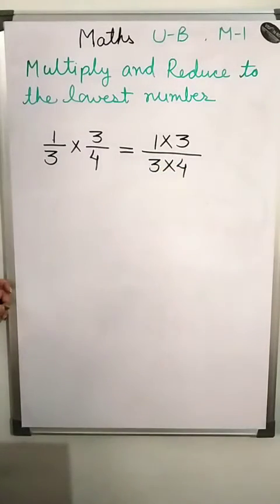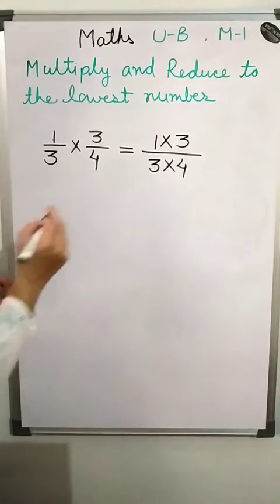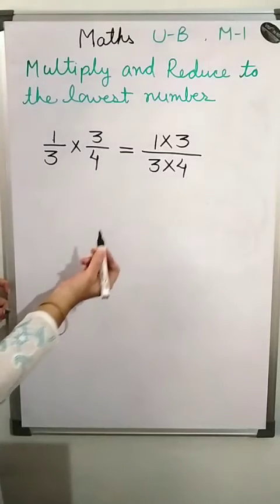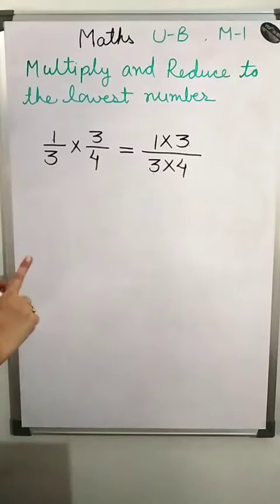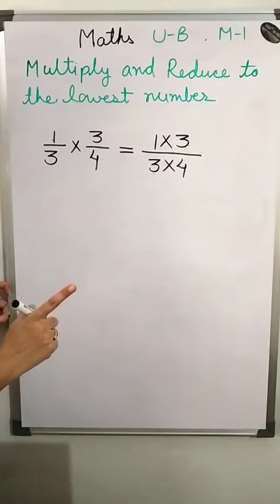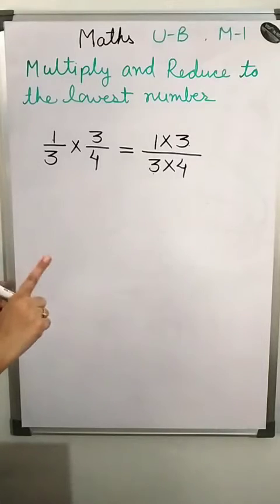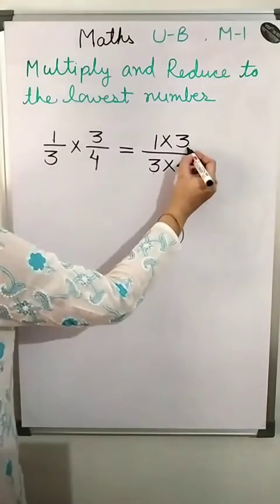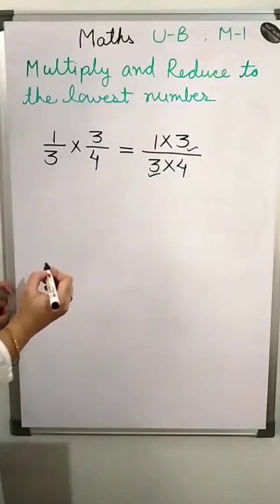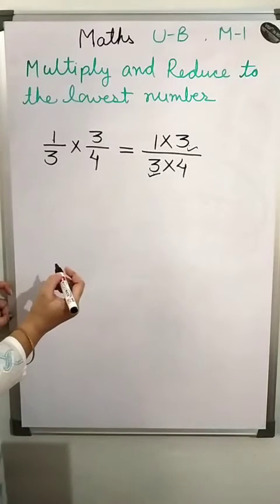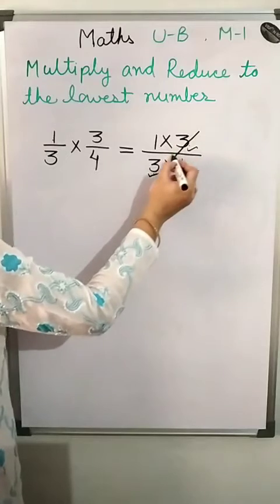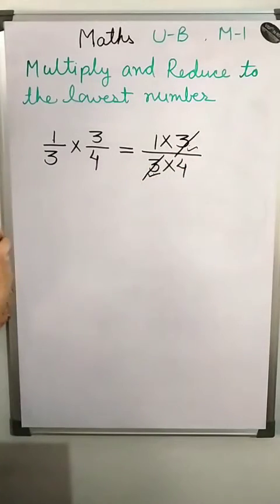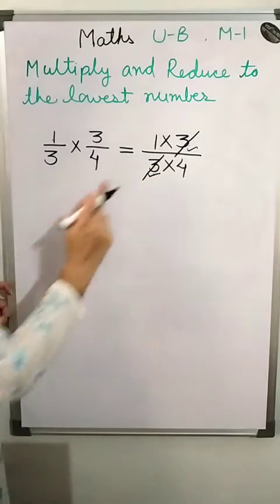Before multiplication, just check if anything can be reduced. Look at 3 and 3 — we reduce numerator to denominator, not numerator to numerator. These two are the same number, so we can cut them because they are both in a single table.